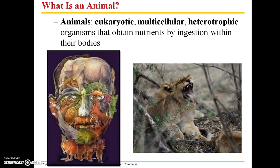So what is an animal? Animals are eukaryotic, multicellular, and heterotrophic. They obtain nutrients by ingestion within their bodies.